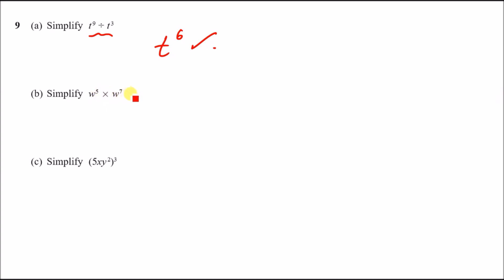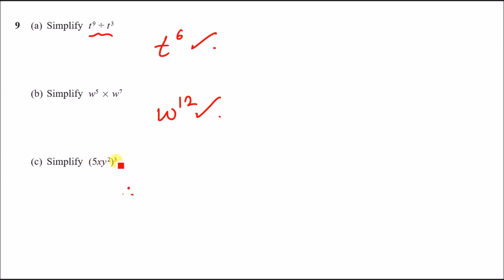Next: simplify w⁵ × w⁷. When you multiply, you add the powers: 5 plus 7 is 12, giving w¹². Last part: simplify (5xy²)³. You attach the power of 3 to everything inside the bracket.